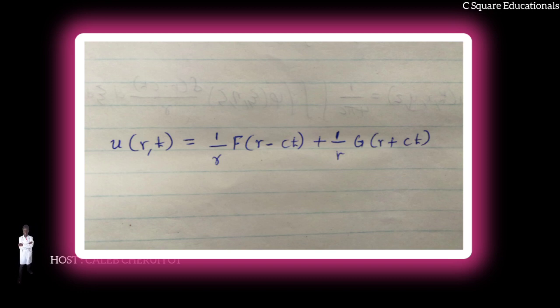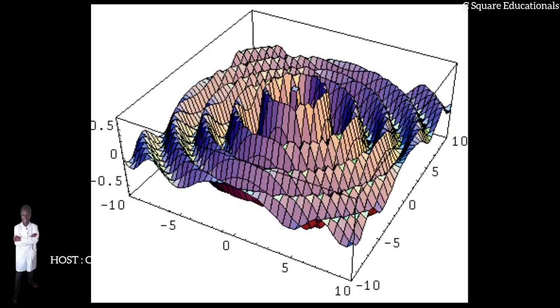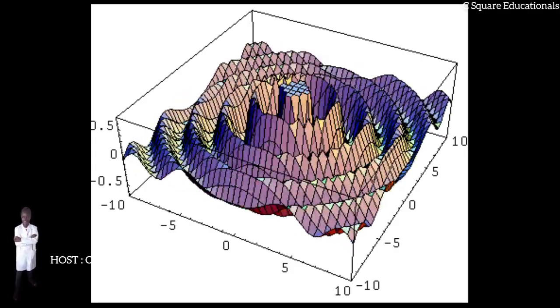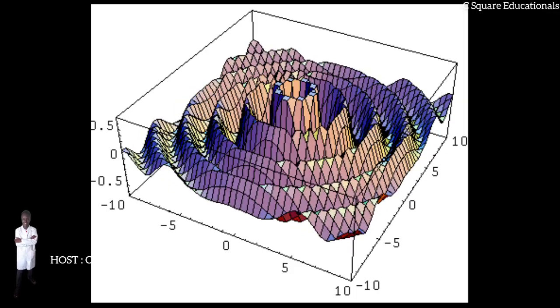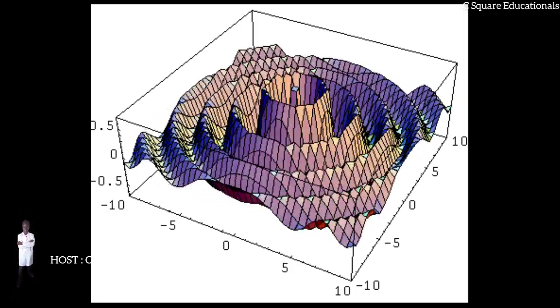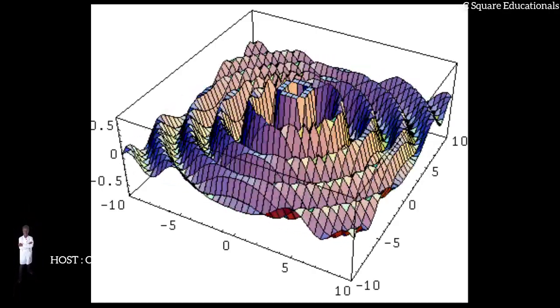The outgoing wave can be generated by a point source, and they make possible sharp signals, whose form is altered only by a decrease in amplitude as r increases. Such waves exist only in cases of space with odd dimensions.